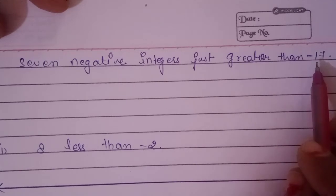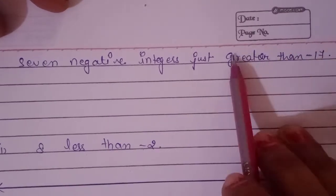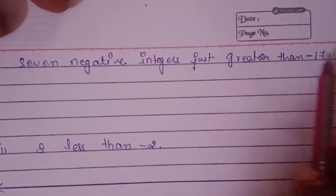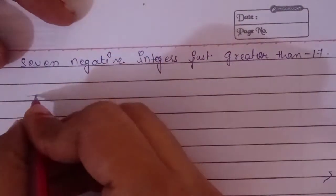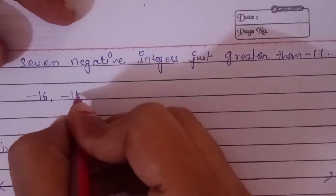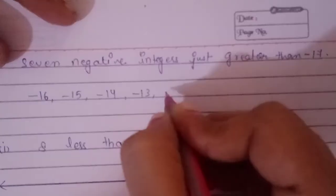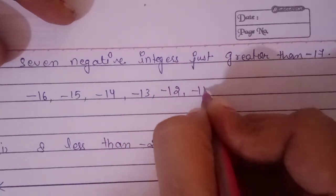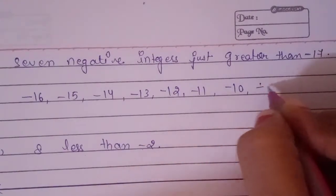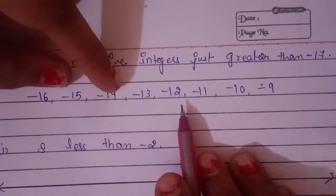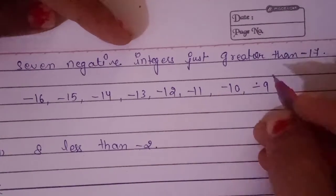The number is decreasing just like we have done in the previous question. We want numbers greater than minus 17, so we actually start decreasing the number. The answer will be: minus 16, minus 15, minus 14, minus 13, minus 12, minus 11, minus 10. I have written 8 by mistake — any 7 you can write down.